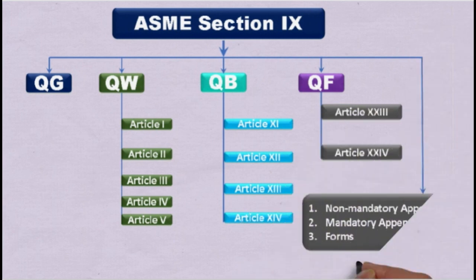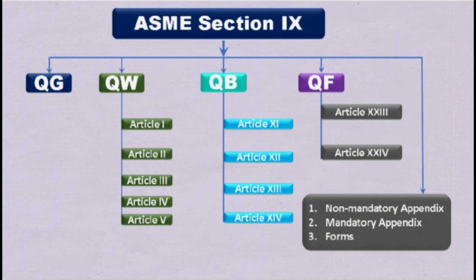The general requirements are specifically applicable to the material joining process: Article 1 for welding, Article 11 for brazing, and Article 21 for plastic fusing. Procedure qualifications are covered in Article 2 for welding, Article 12 for brazing, and Article 22 for plastic fusing. Performance qualifications are covered in Article 3 for welding, Article 13 for brazing, and Article 23 for plastic fusing. General data for welding is given in Article 4, Article 14 for brazing, and Article 24 for plastic fusing.